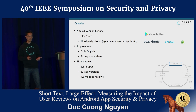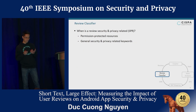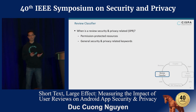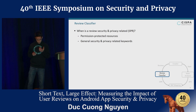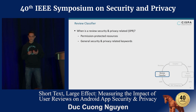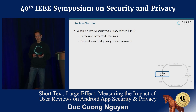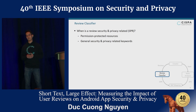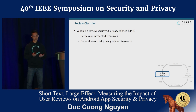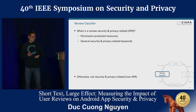Now we have the dataset. The first thing we want to do is define what is a security and privacy-related review. We need to take a step back and define the term from the end-user perspective, meaning we consider what the end-user can see from Android applications. Therefore, we focus on permission-protected resources, because this is the only information visible to end-users, either by runtime permission mechanism or install-time permission mechanism. We also extract keywords based on existing literature on user perception of security and privacy problems of Android applications. When a review does not talk about either of these aspects, we consider it non-security and privacy-relevant.